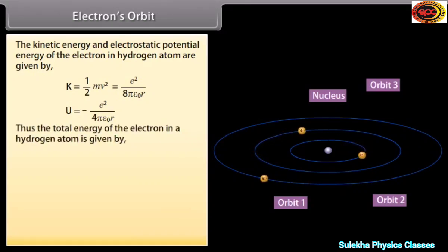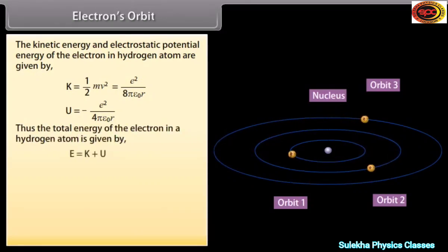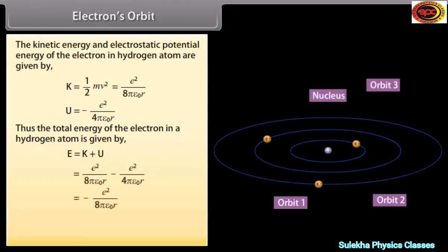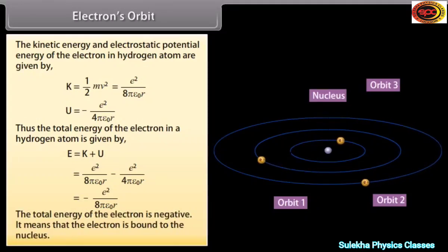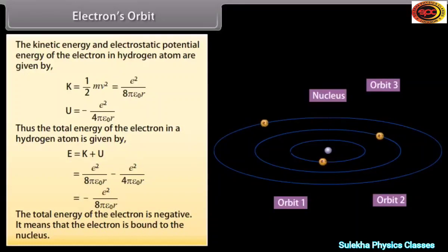Thus the total energy of the electron in a hydrogen atom is E = K + U = −E²/(8πε₀R). The total energy of the electron is negative, meaning that the electron is bound to the nucleus.